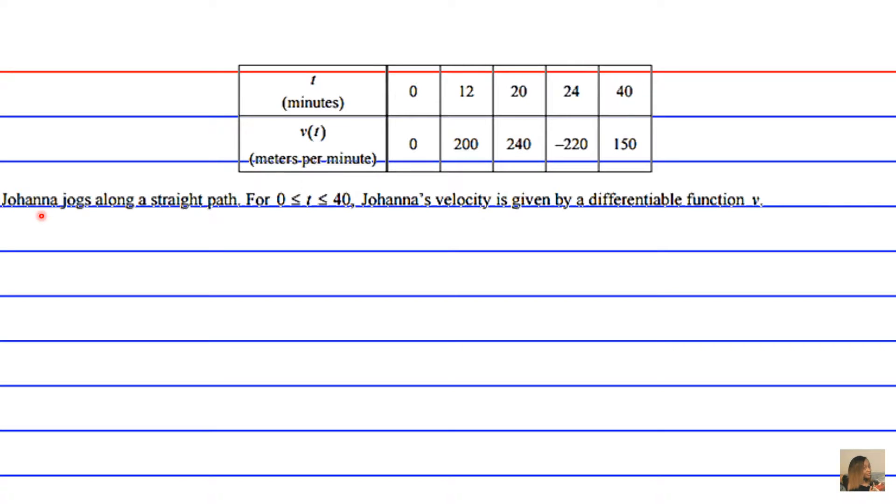All right, so Johanna jogs along a straight path for a time in minutes that's either greater than or equivalent to zero minutes or less than or equivalent to 40 minutes.